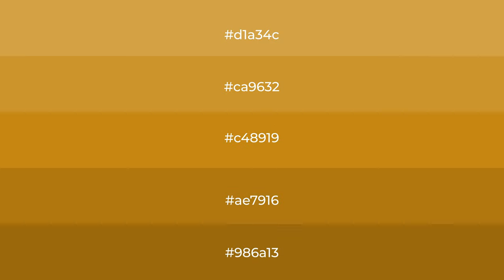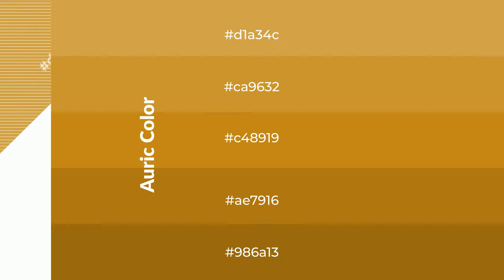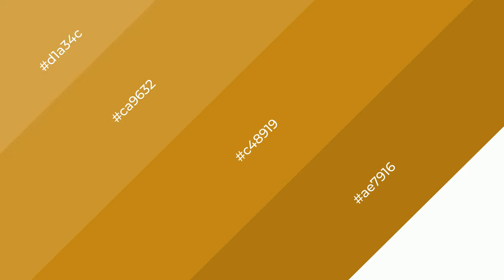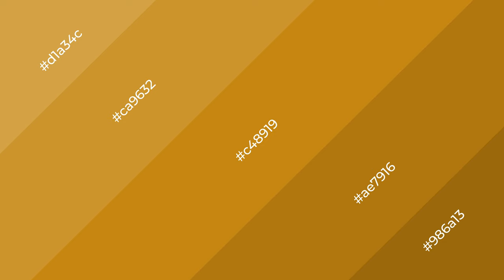To generate shades of a color, we add black to the color. Shades are used in patterns and 3D effects. Layers and shades create depth and drama. Auric is a warm color and it emits cozier and active emotions.